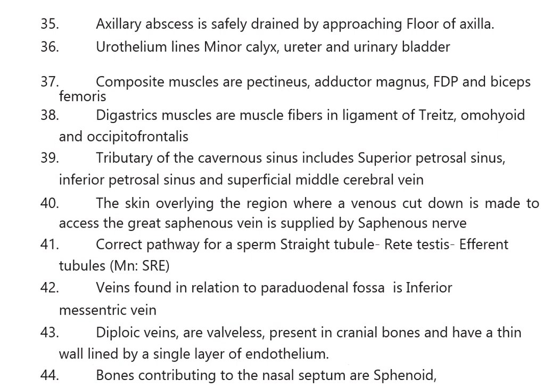The correct pathway for sperm is: seminiferous tubule → rete testis → efferent tubules. The vein found in relation to the paraduodenal fossa is the inferior mesenteric vein. Diploic veins are valveless, present in cranial bones, have a thin wall lined by a single layer of endothelium.